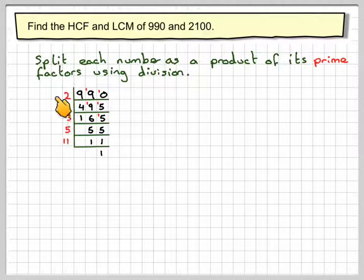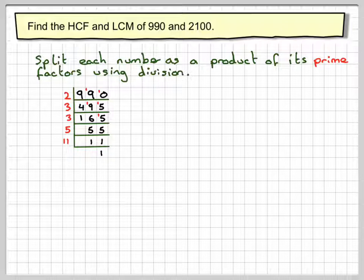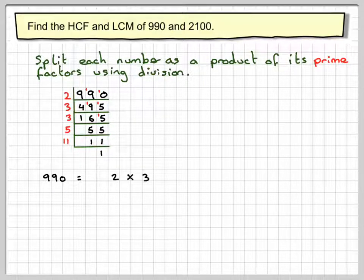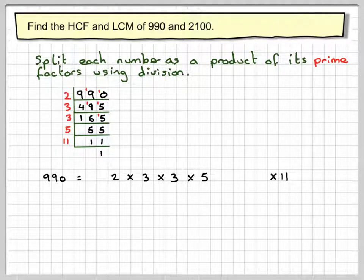If you did this in a different order, it wouldn't really matter, but it's easier to divide by smaller numbers first. Then list the prime factors of 990: 2 times 3 times 3 times 5 times 11. I left space for any 7s or other 2s I might get with the other number.